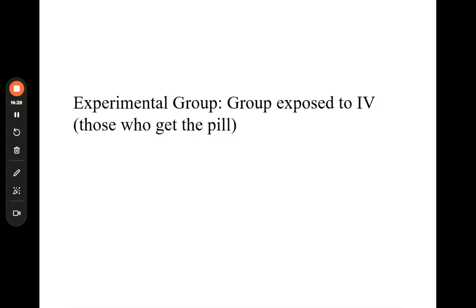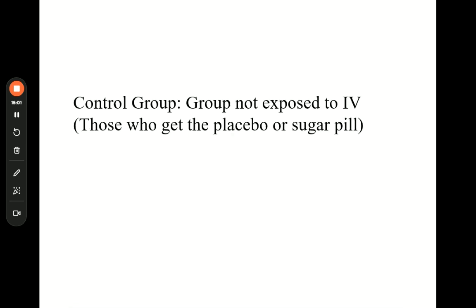To review: the experimental group is the group that gets the independent variable — the bananas, the anti-anxiety medication. The control group is not exposed to the independent variable; they don't get the bananas or the medication. Instead, they get a sugar pill or an inert substance — inert means it's harmless and doesn't do anything. You have to have a control group because you need it as a basis for comparison.